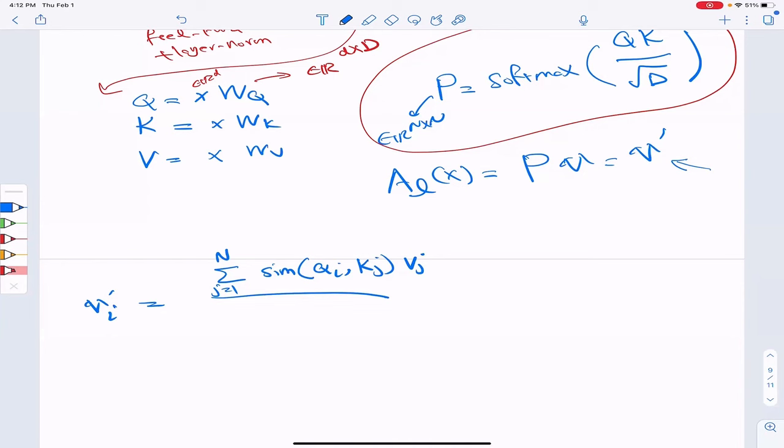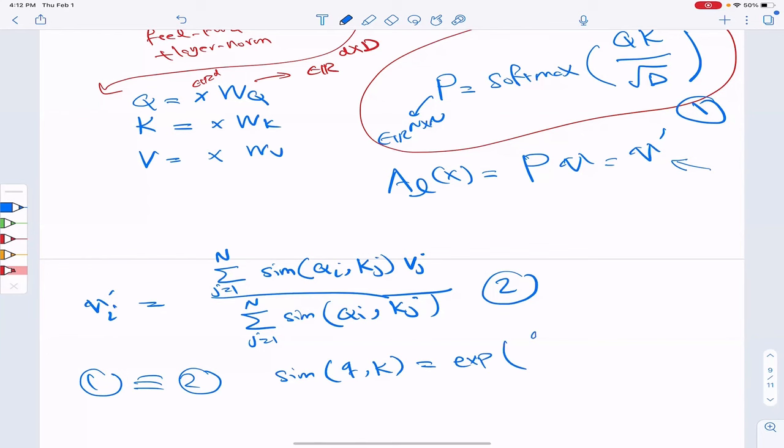Remember we get these similarity numbers and we multiplied it with the value vector corresponding to j and we normalize it by looking at summation from one to n similarity between q i, query i and key j.